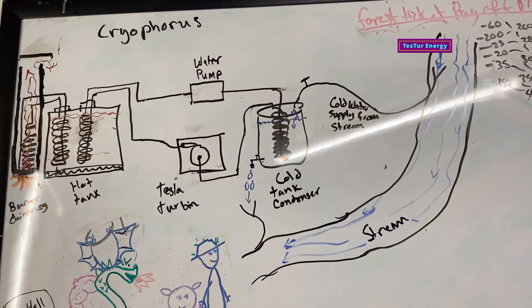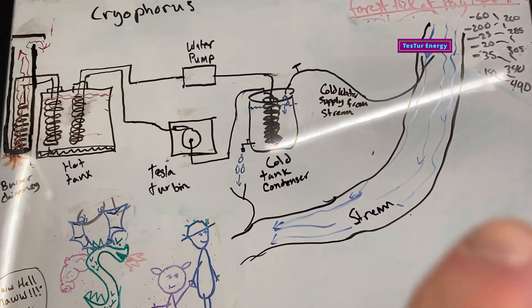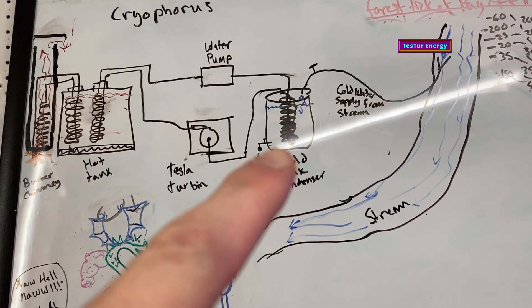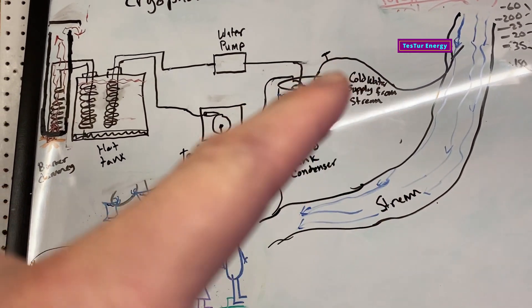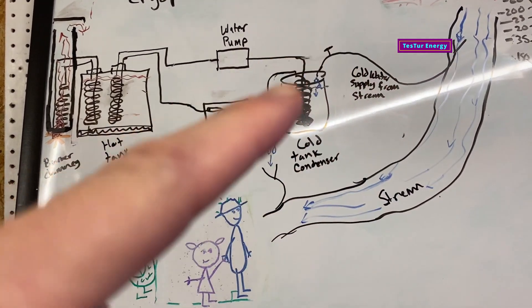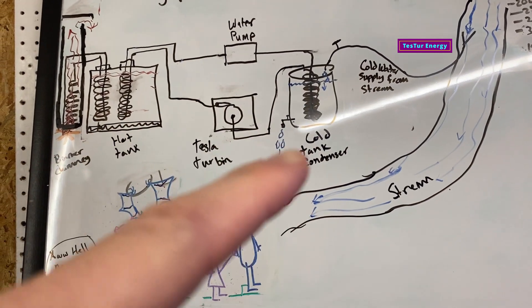Because it will be best that you refresh your cold tank, your cold side condenser side, with cold water from the river and let the natural head of it fill up your cold tank and then that just drains back into your stream.